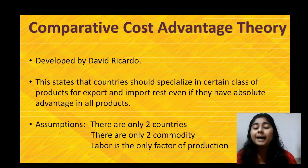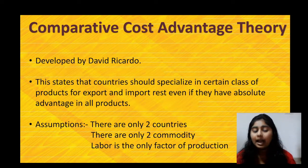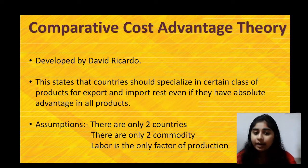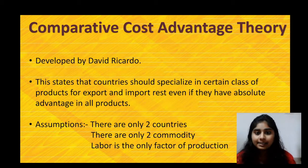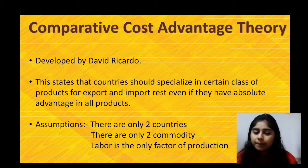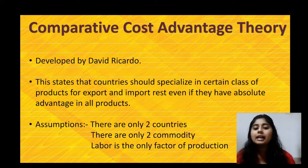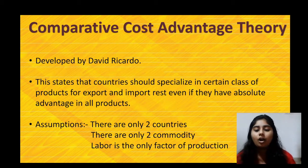The first one is comparative cost advantage theory. This theory was developed by David Ricardo and states that a country should specialize in certain classes of products for export and import, even if they have an absolute advantage in all products. There are three main assumptions: there are only two countries, two commodities, and labour is the only factor of production.